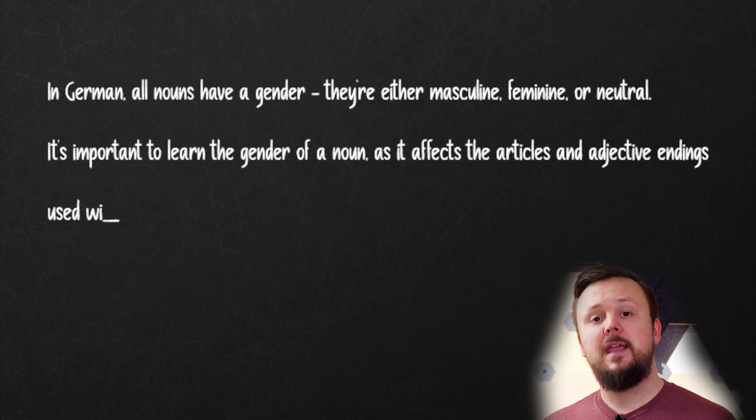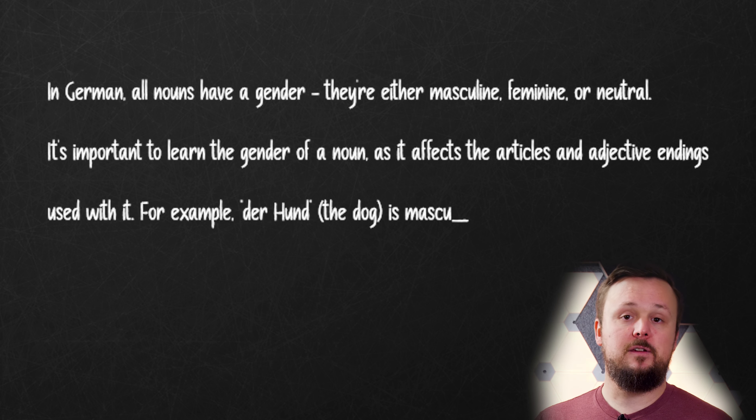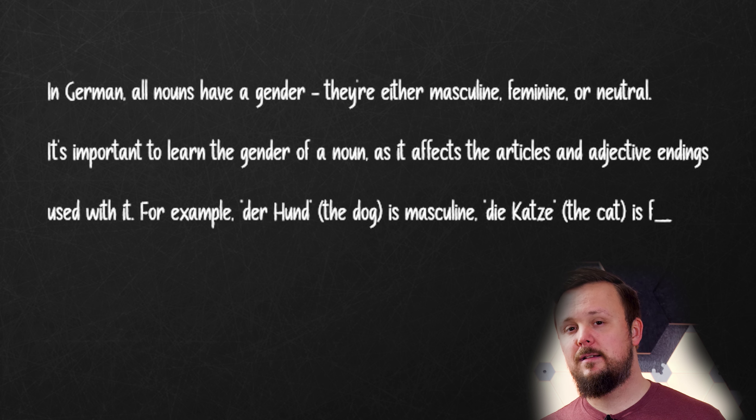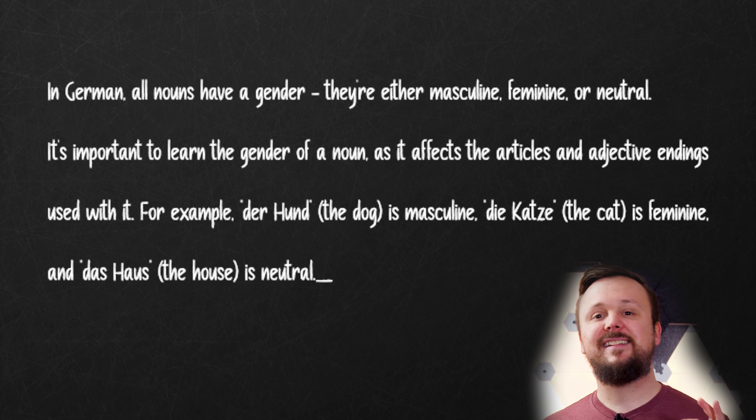For example, der Hund — the dog — is masculine. Die Katze — the cat — is feminine. And das Haus — the house — is neutral. In German, nouns are capitalized and can be masculine, feminine, or neuter. Knowing the gender of a noun is important because it affects the articles, adjectives, and pronouns that are used with it.